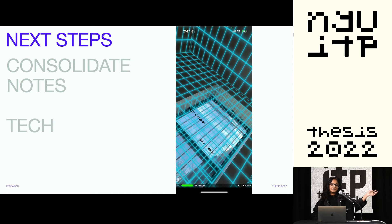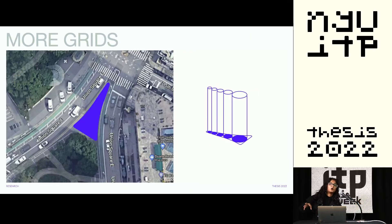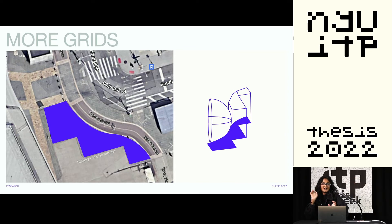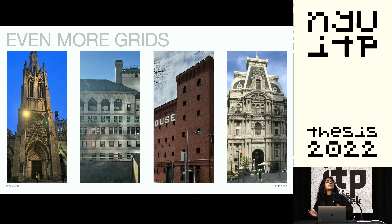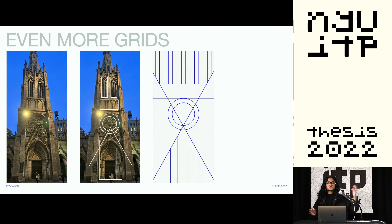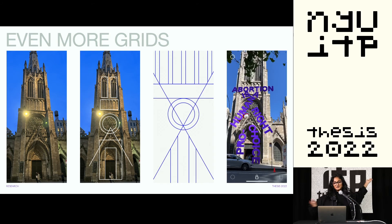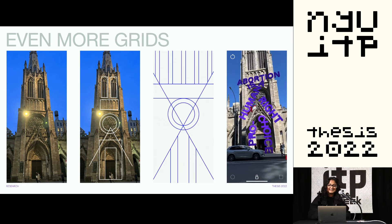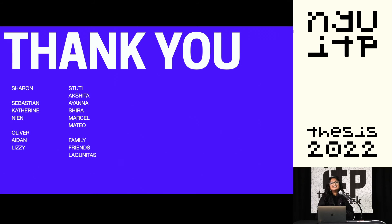Next steps would be to consolidate the notes and probably the tech — like, make it actually respond to the space. I also want to move away from the traditional X and Y, and look at spaces that would provide for a more unique elevation, or use the facades of a building as a grid. For example, this church would make for such an interesting grid — imagine a pro-choice poster on this church. It would be amazing. Anyway, I want to thank everybody. Thank you.